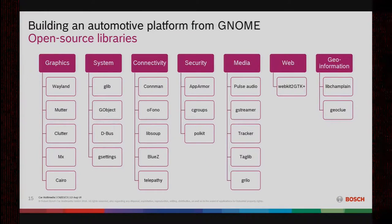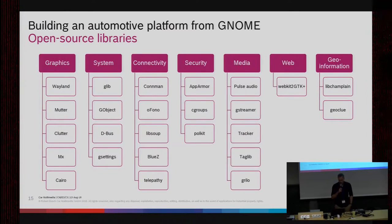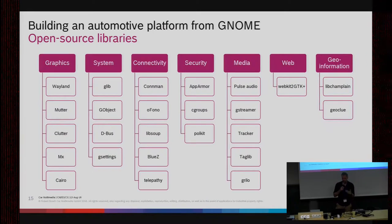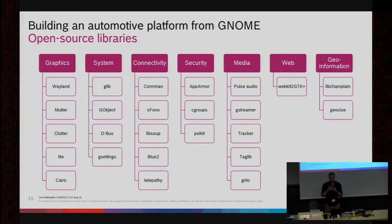Here's an overview of libraries we use. The system is based on Wayland. We use Mutter as compositor. Clutter, MX, and Cairo are used for the graphics system. We use GLib, GObject, D-Bus, and GSettings as the base. For connectivity, ConnMan, oFono, libsoup, BlueZ, and Telepathy. Security uses AppArmor, cgroups, and so on. For media and WebKit2GTK, a whole bunch of open source solutions, and also tools for GeoInformation.